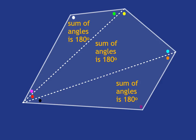And so if we look at the sum of all the angles in the pentagon altogether, we will get that it is the equivalent of three triangles, which is three times 180, which is 540.